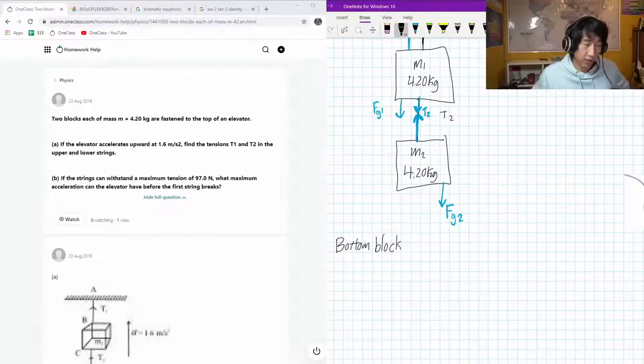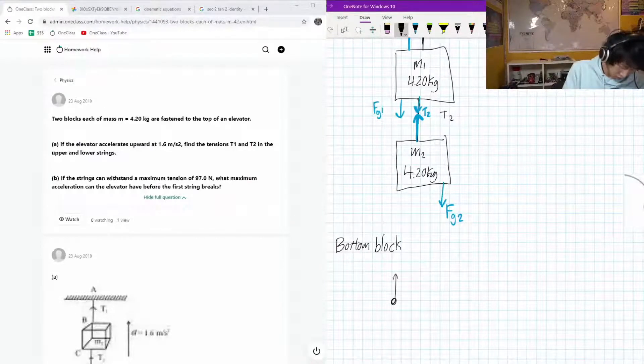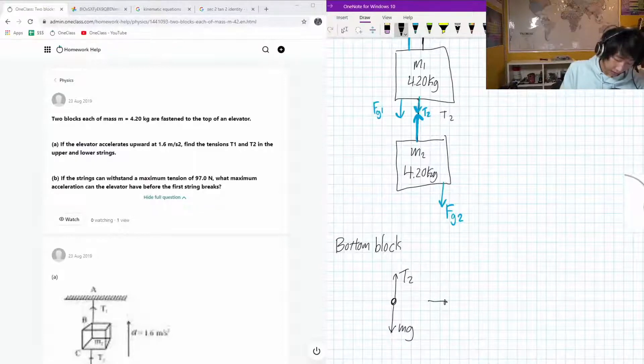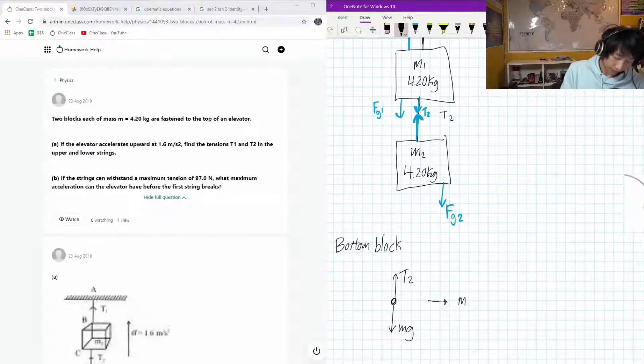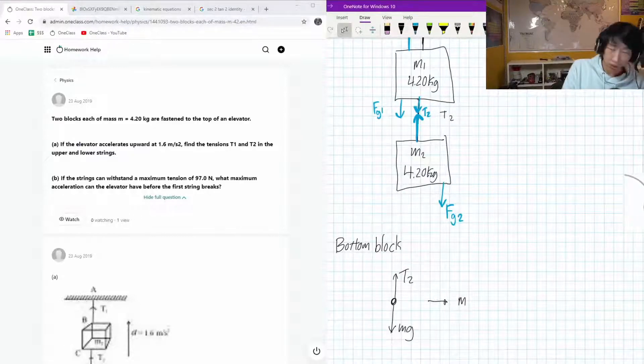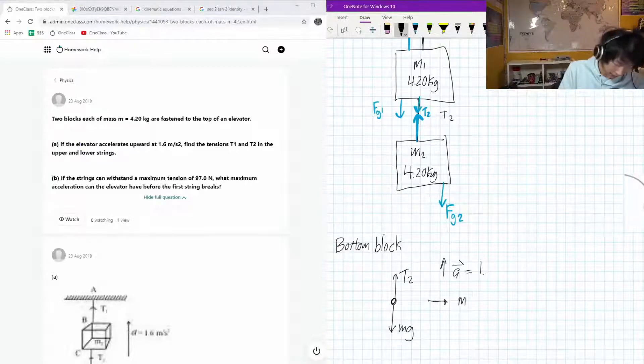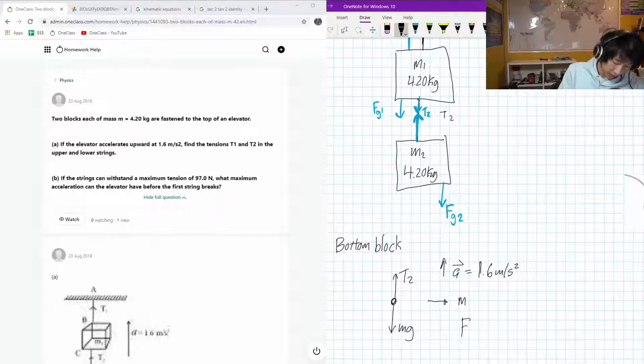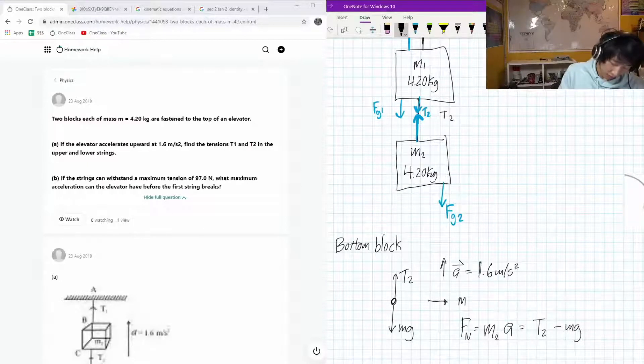So we only got two forces on the bottom block. We have the tension pulling it up, and the gravitational force going down. T2 and mg. So we know that the net force of this is going to correspond to the acceleration upwards, which is going to be 1.6 meters per second squared. So as a result of this, we know that the net force is going to be the mass of the second block times A that was given to us. And that's going to be equal to the tension force minus the gravitational force.